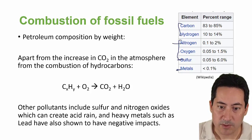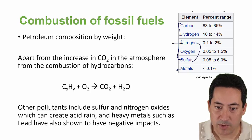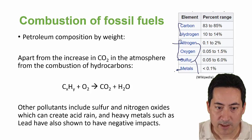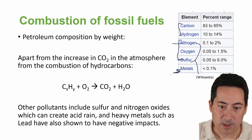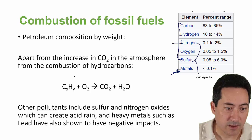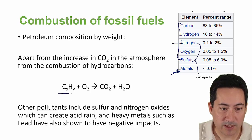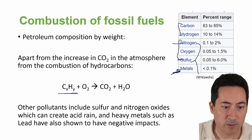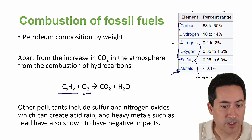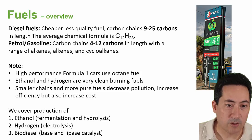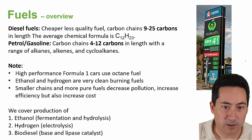Sulfur and nitrogen produce oxides, which can cause acid rain, and other metals form other sorts of pollution. For combustion, you're going to need the formula — combustion of a hydrocarbon must be balanced. Combined with oxygen, it releases carbon dioxide and water. So just a quick overview of fuels in general as well.